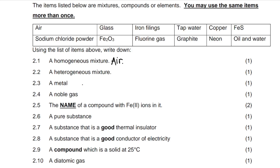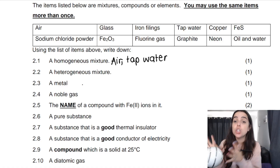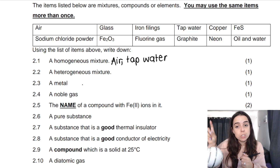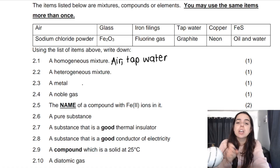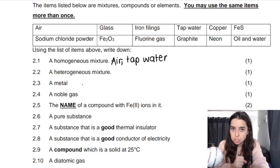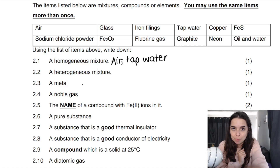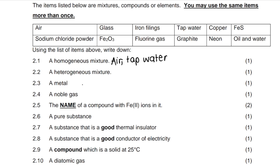Another homogeneous mixture is tap water. You might say — isn't water a compound? If you're an element or compound you're a pure substance, not a mixture. Water is H₂O, but tap water is different from pure water. Tap water contains dissolved minerals — ions and similar things — so technically it is a mixture. However, it's a homogeneous mixture because you can't see the different minerals or ions floating in the water; tap water is uniform in composition throughout. Those are the only two homogeneous mixtures on the list.